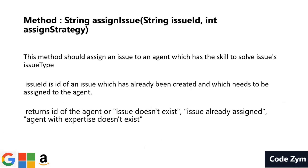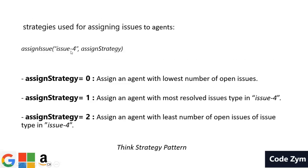The next method is assignIssue, which is the core of this customer issue resolution system. There will be different strategies for assigning based on the assign strategy variable and an issue ID. This method should return either 'issue doesn't exist', 'issue is already assigned to an agent', or 'agent with expertise doesn't exist'. If assign strategy is 0, we assign an agent with the lowest number of open issues. If assign strategy is 1, we assign the agent with the most resolved issues of that issue type. If assign strategy is 2, it's the opposite of 1 — we assign the agent with the least number of open issues of that issue type.